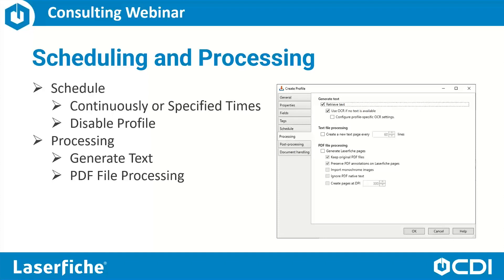Under the Processing tab, we can configure various processing options, such as whether or not we want to retrieve text from the file and/or use OCR if no text is available. We can also configure Laserfiche Import Agent to generate Laserfiche pages for PDFs that it imports — so instead of pulling in the PDF file, Import Agent will convert that PDF into Laserfiche pages, giving us a native document that we can reorder, annotate, and work with as Laserfiche images.